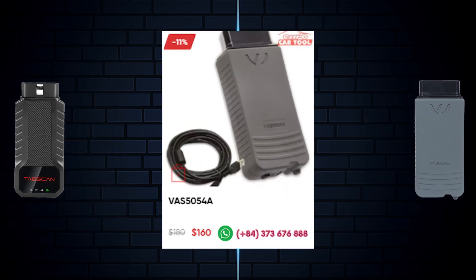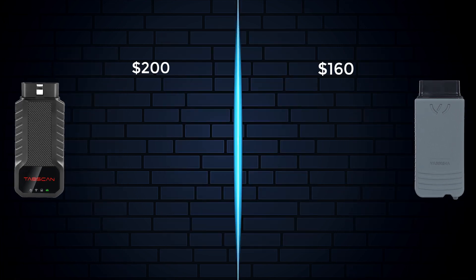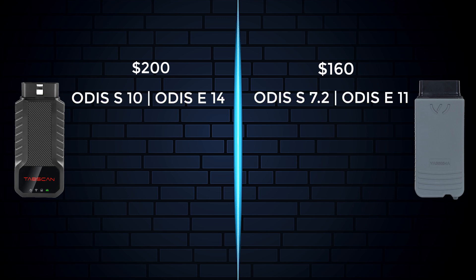First, the TabSkin device has a higher price tag than the VAS5054A, which makes perfect sense because of its special functions I will cover at the end of the video. The TabSkin is compatible with the latest VAG specialized software such as ODIS S10 and ODIS E14, while the VAS5054A can only be compatible with older software versions.